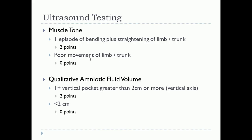Lastly, you need a qualitative amniotic fluid volume, or amniotic fluid index — AFI or AFV. For that, you need to measure at least one vertical pocket of two centimeters or more in the vertical axis, which gives you two points. If you don't get at least two centimeters, then it's zero points.